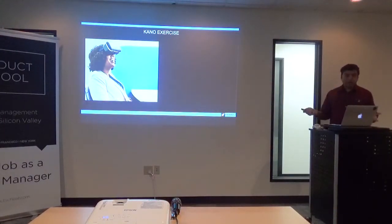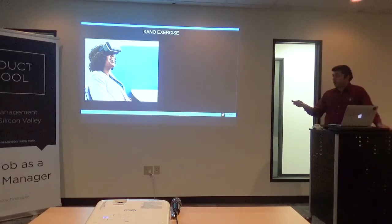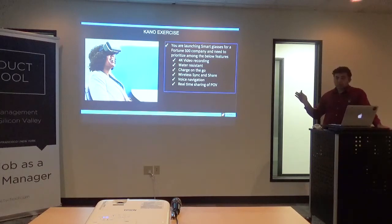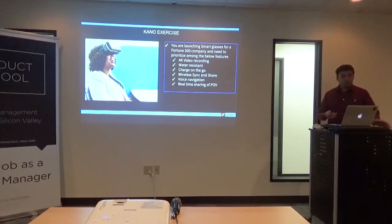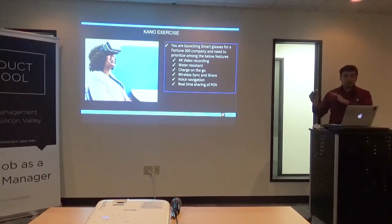Let me go through an exercise using the 4K VR headset example so you can see how to choose among competing priorities. You're launching smart glasses for a Fortune 500 company and need to prioritize among six features: 4K video recording, water resistance, charging on the go, wireless sync and share, voice navigation, and real-time sharing of point of view.